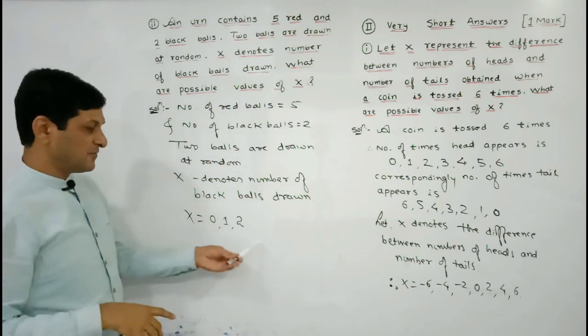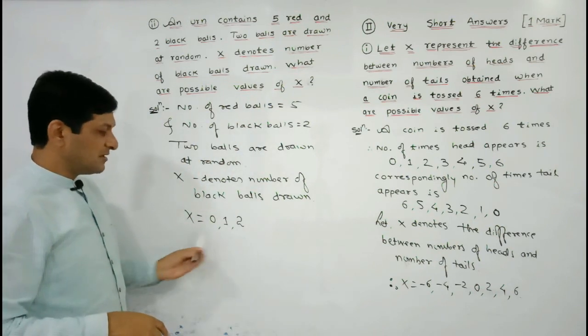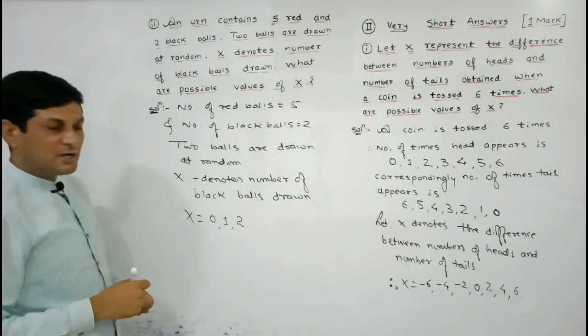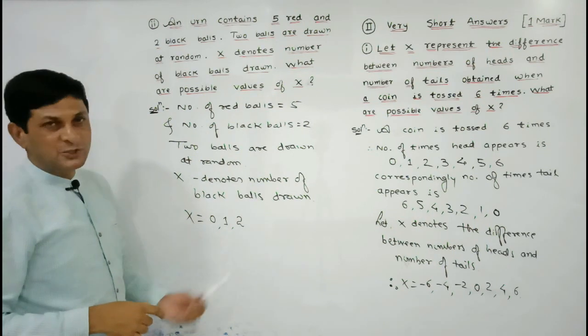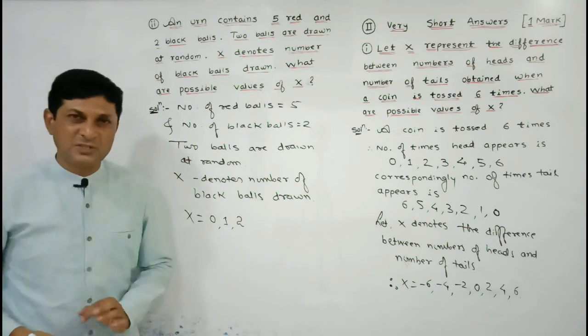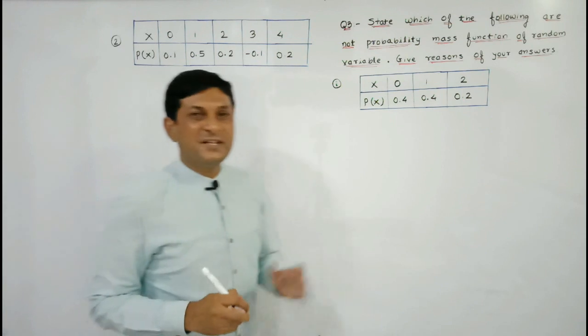So here the possible values of X are 0, 1, and 2. In this way we have found the possible values of X.